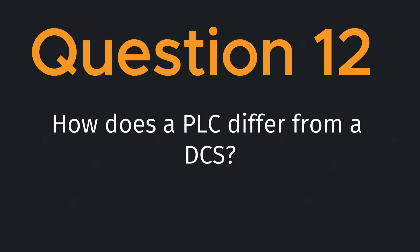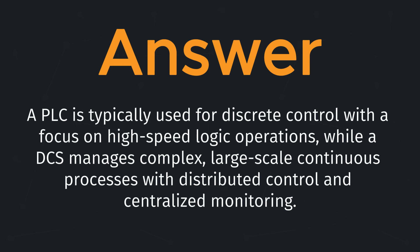Question twelve: how does a PLC differ from a DCS? A PLC is typically used for discrete control with a focus on high-speed logic operations, while a DCS manages complex, large-scale, continuous processes with distributed control and centralized monitoring.